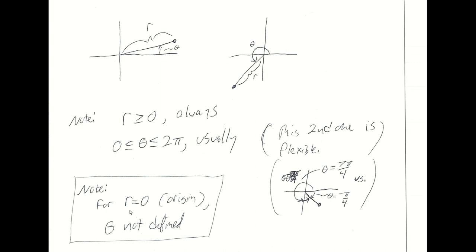If you take r equal to zero, you're talking about the origin — only the origin is a distance of zero from the origin. So the equation r equal to zero indicates the origin, and theta is not actually defined for the origin. You could say no theta value is defined, or that all theta values work — those are fairly equivalent. Just note that r equal to zero refers to the origin, and in general we do not define the angle associated with the origin.